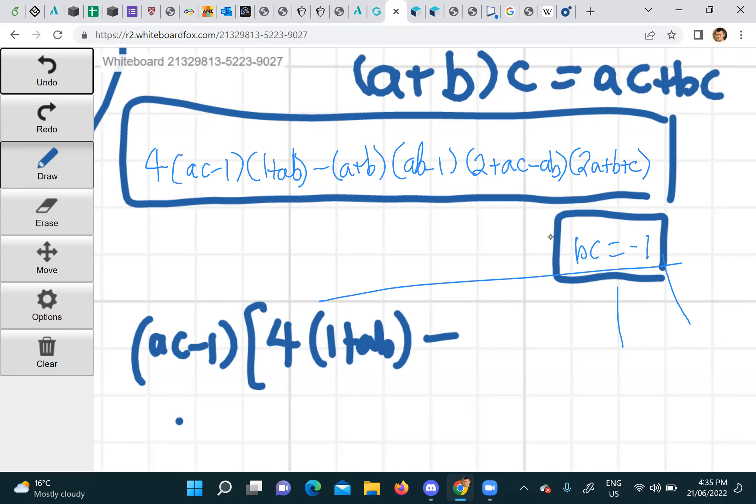But you can't just times something by c, you have to divide it by c also. But luckily, bc equals minus one, so you can times the whole thing by minus bc and that'll be the same as timesing it by one. So it'll be plus b.